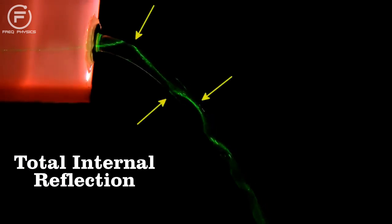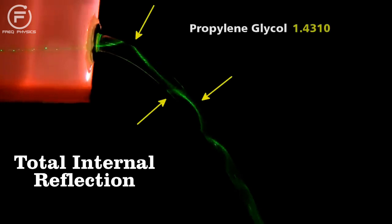This occurs because there's a difference between the index of refraction of the guide material, here propylene glycol, and the outside, air in this case.